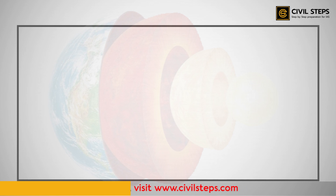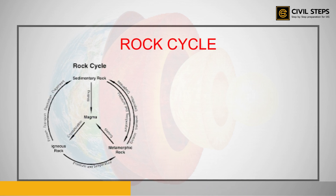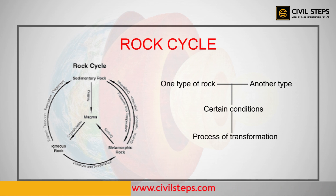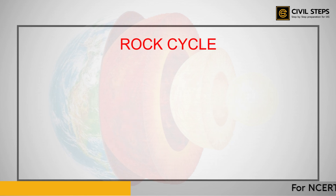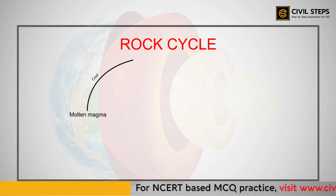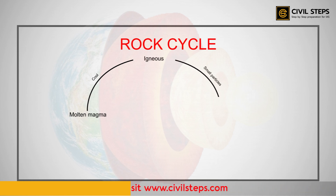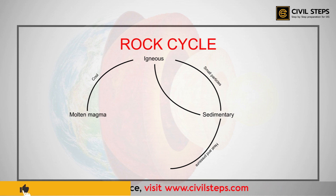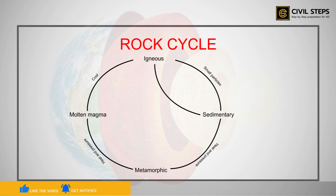When one type of rock changes to another type under certain conditions in a cyclic manner, this process of transformation is known as the rock cycle. When molten magma cools, it solidifies to become igneous rocks. When igneous rocks are broken down into small particles and transported and deposited, they form sedimentary rocks. When both igneous and sedimentary rocks are subjected to heat and pressure, they change into metamorphic rocks — so there is a cycle from igneous to sedimentary to metamorphic.